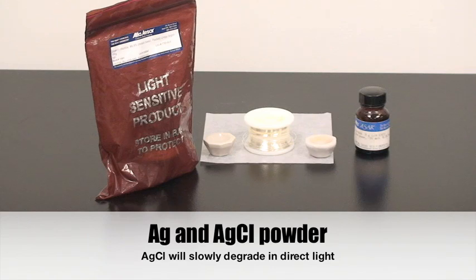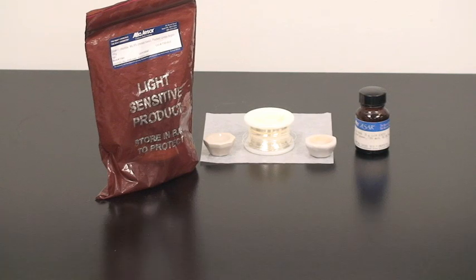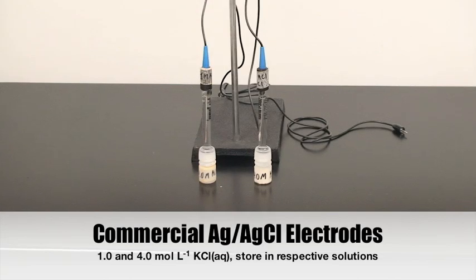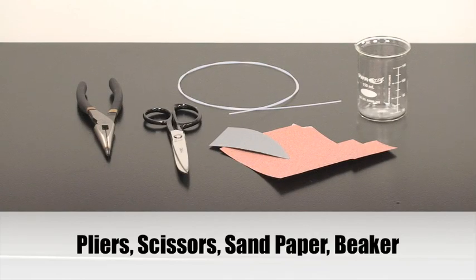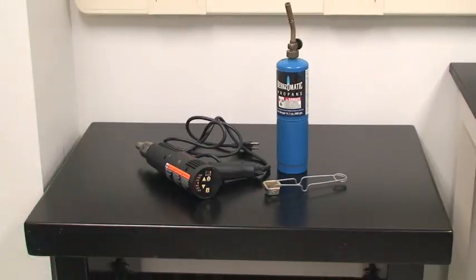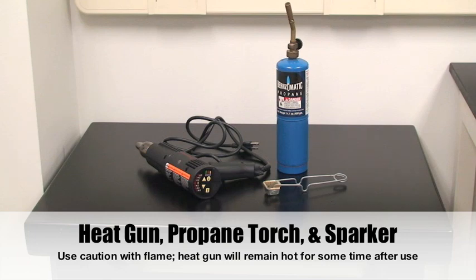Silver Chloride and Silver Powder, as well as a Spool of Silver Wire, a 1 M and 4 M potassium Chloride Silver Silver Chloride Reference Electrodes. Pliers, Scissors, Sandpaper, a Beaker as well as Shrinkable Teflon Tubing, an Electric Heat Gun, Propane Torch, and Sparker or Lighter.